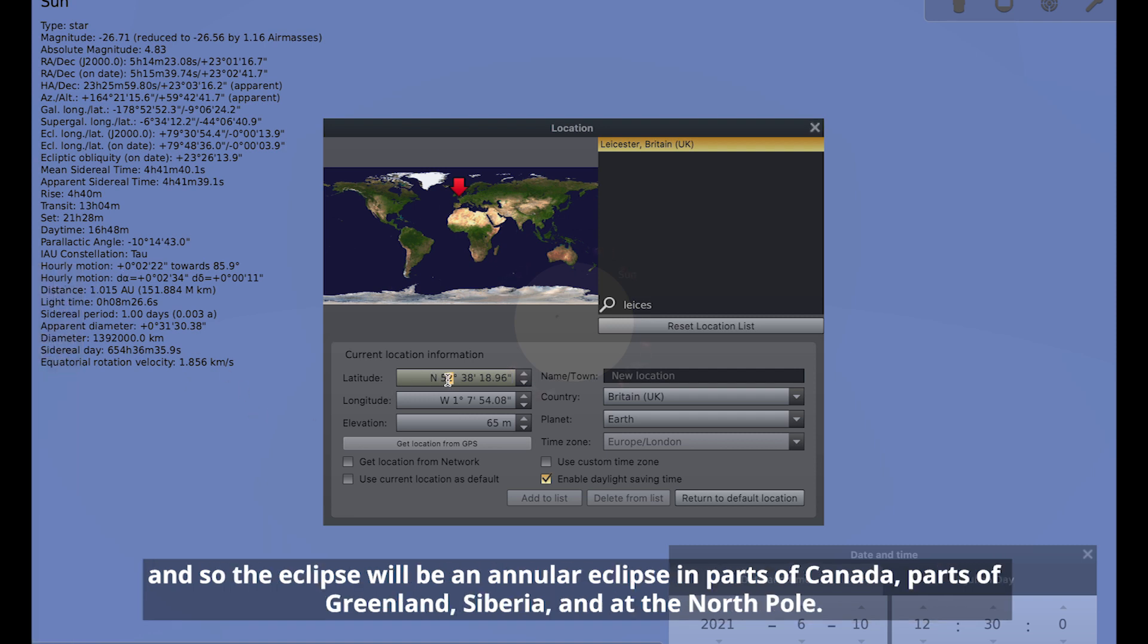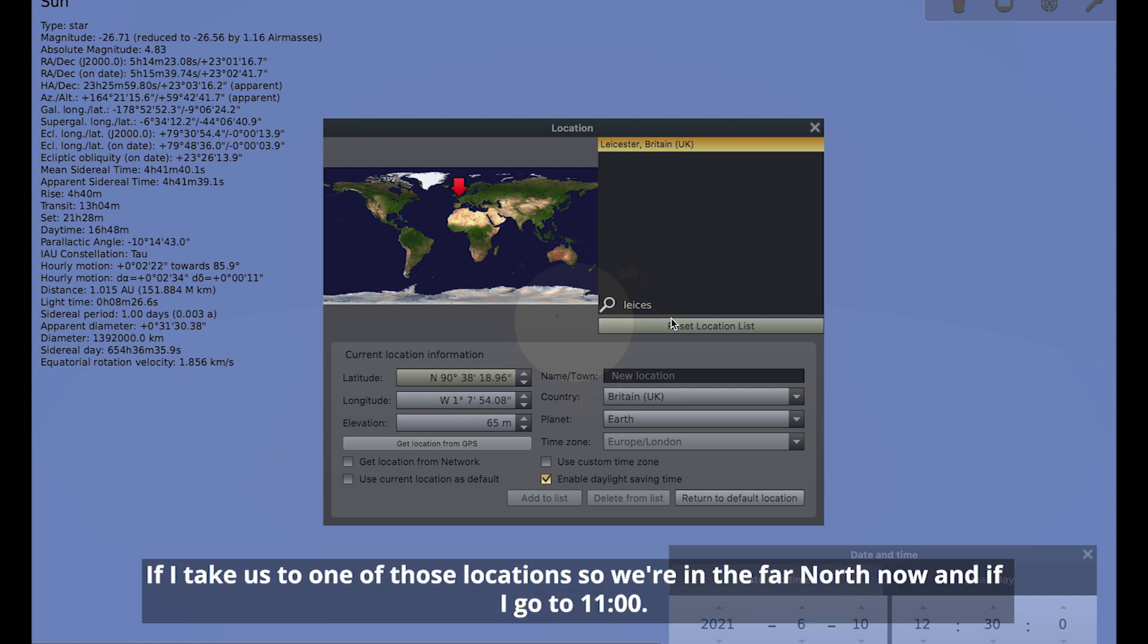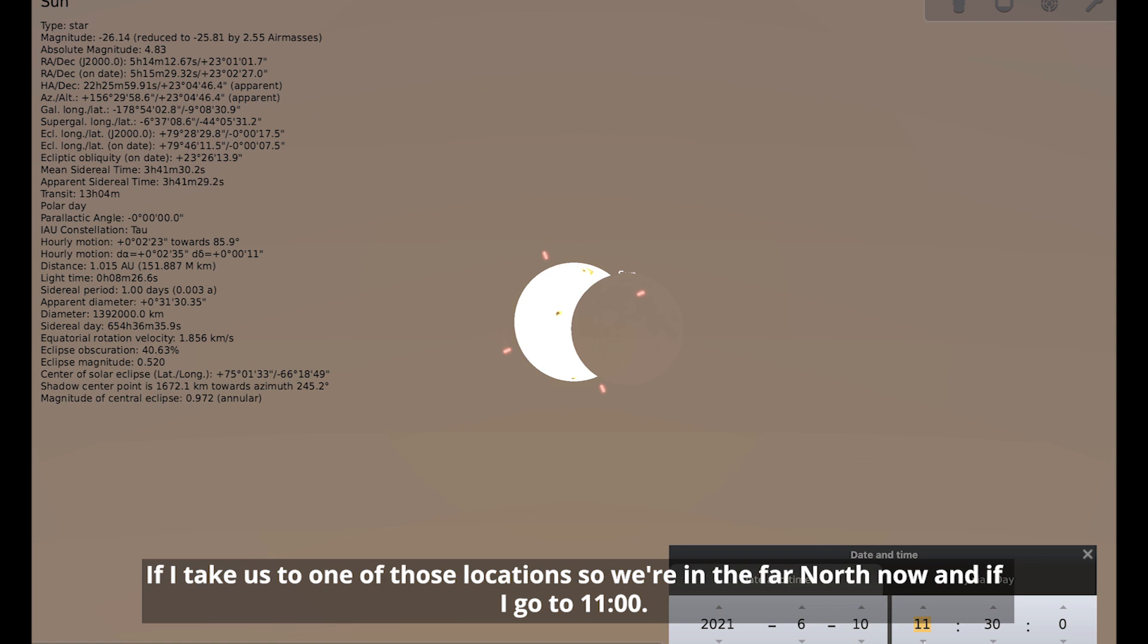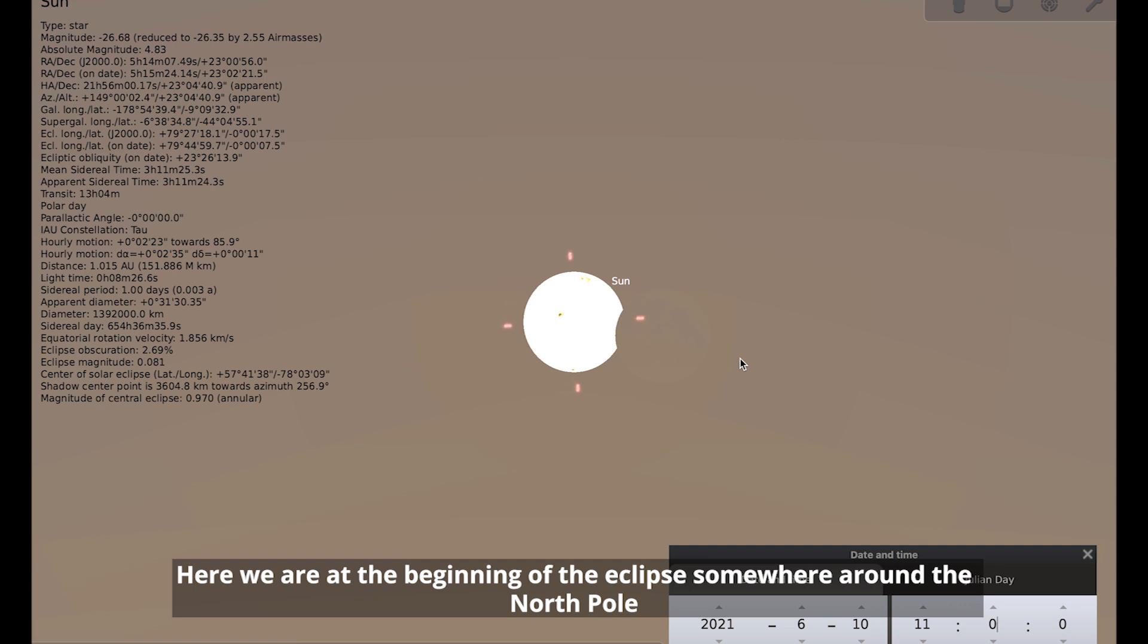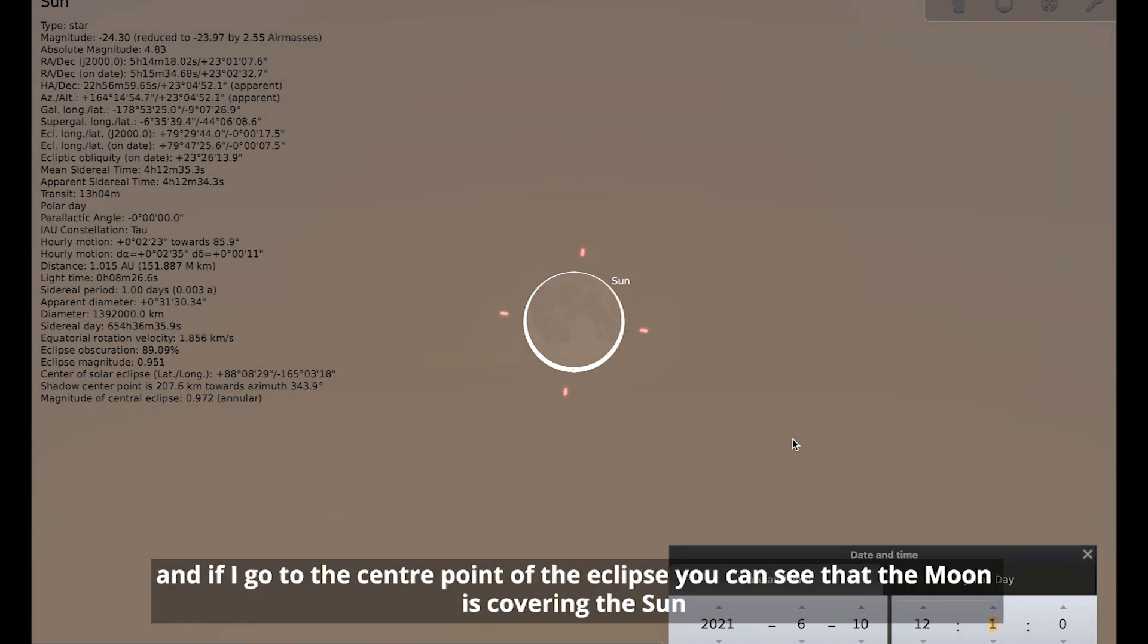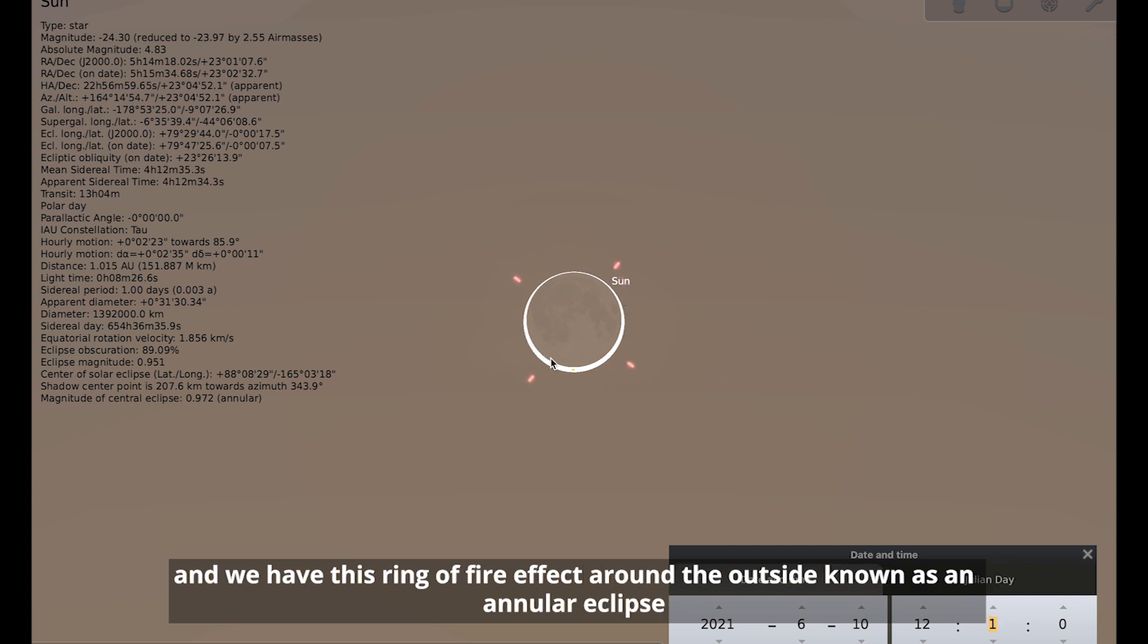You can still see a ring of the sun surrounding the moon. And I'll show you what that looks like by taking us to a location where the eclipse is going to be annular. So the eclipse will be an annular eclipse in parts of Canada, parts of Greenland, Siberia, and at the North Pole. So if I take us to one of those locations, we're in the far north now. Here we are at the beginning of the eclipse somewhere around the North Pole. And if I let the eclipse happen, you can already see that much more of the sun's surface is getting covered by the moon than it is in the UK.